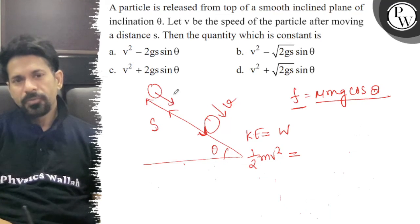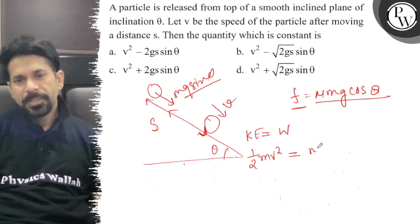So along, this force will be mg sin theta. So work done by mg is how much? Mg sin theta into displacement s, plus work done by friction.